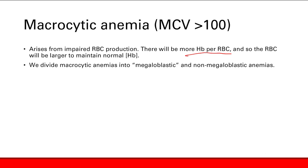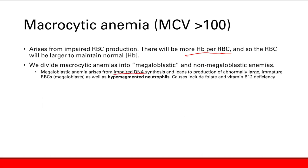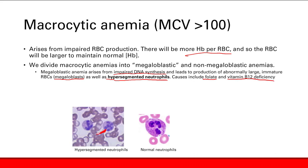We can divide macrocytic anemias into megaloblastic versus non-megaloblastic anemias. A megaloblastic anemia arises from impaired DNA synthesis, and you get production of abnormally large, immature red blood cells — called megaloblasts. The other key characteristic is you see hypersegmented neutrophils. Causes of megaloblastic anemia include folate and vitamin B12 deficiency. A hypersegmented neutrophil has over five lobes in the nuclei, compared to the normal neutrophil which has around three lobes. This is pretty much characteristic of megaloblastic anemia.